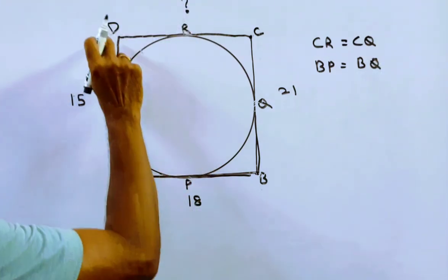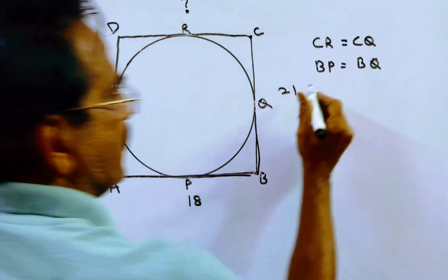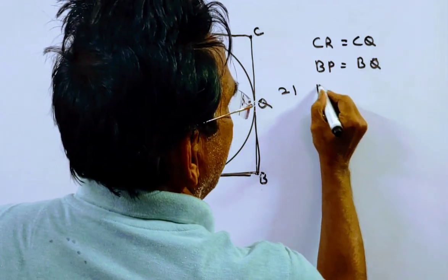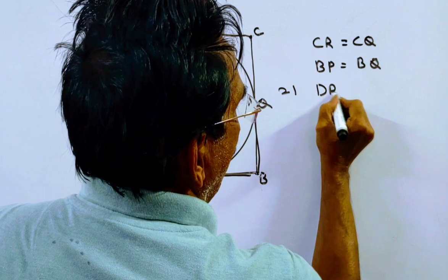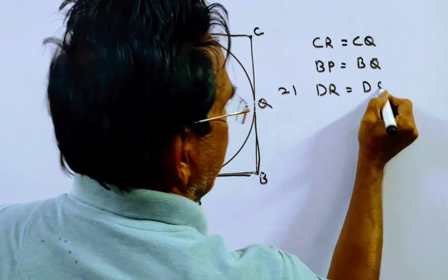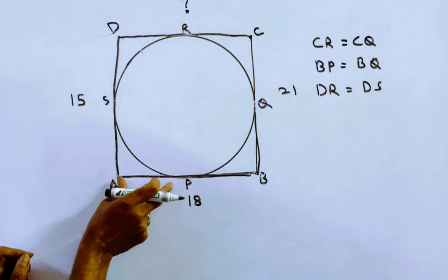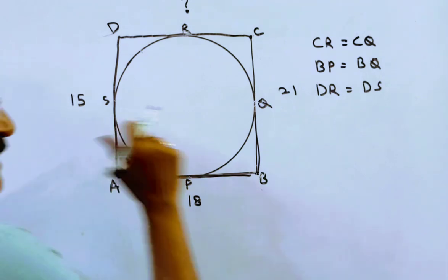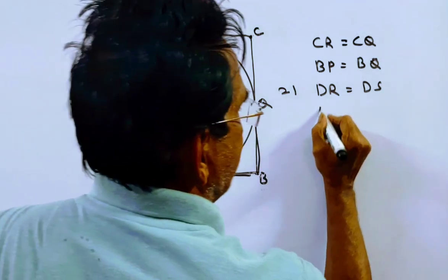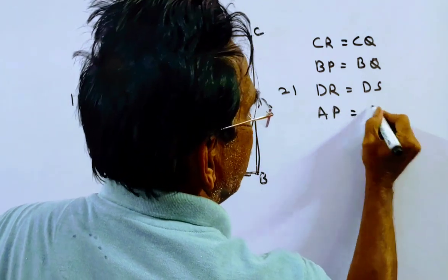In the same way, D,R is equal to D,S. In the same way, A,P is equal to A,S.